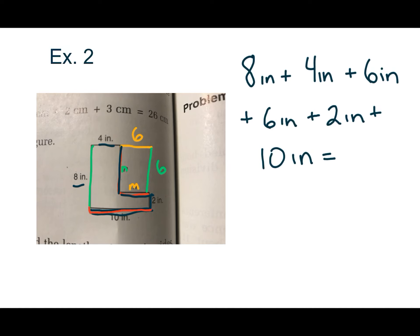So 1, 2, 3, 4, 5, 6 sides. And again, I'm going to add these up using 10s. This makes a 10. 10 plus 10 is 20, plus another 10 is 30. So I get 36 inches.